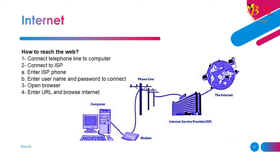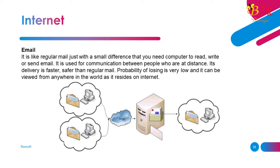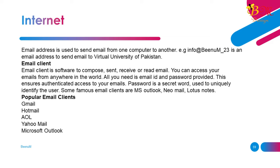Email: It is like regular mail, just with the difference that you need a computer to read, write, or send email. It is used for communication between people who are at a distance. Its delivery is faster and safer than regular mail. The probability of losing it is very low, and it can be viewed from anywhere in the world as it resides on the internet. An email address is used to send email from one computer to another. An email client is software used to compose, send, receive, or read email. You can access your emails from anywhere — all you need is your email ID and password, which ensures authenticated access.